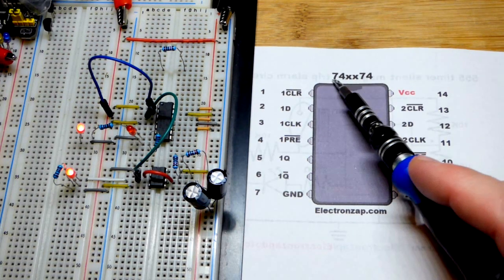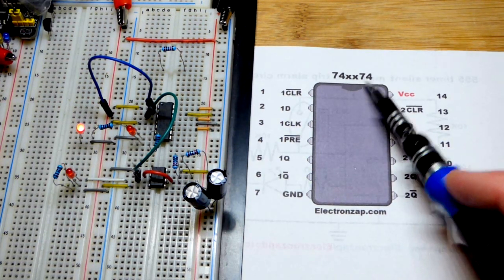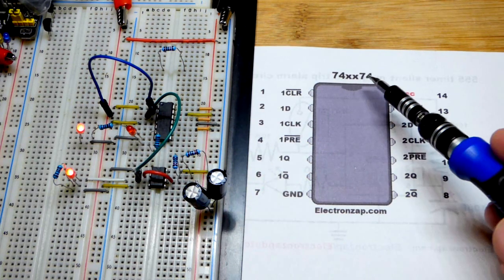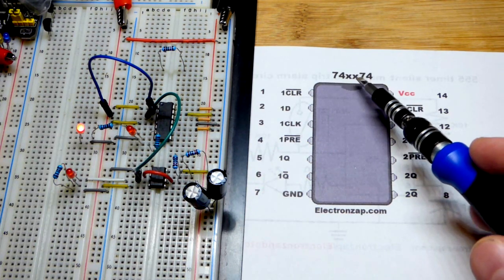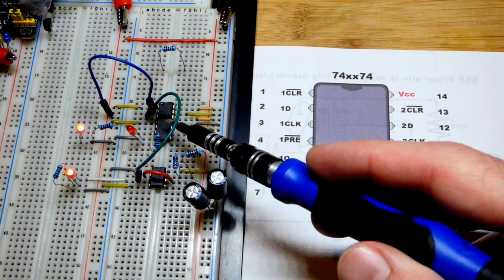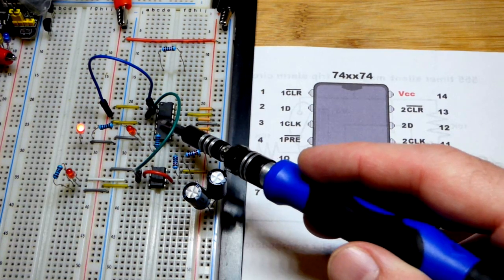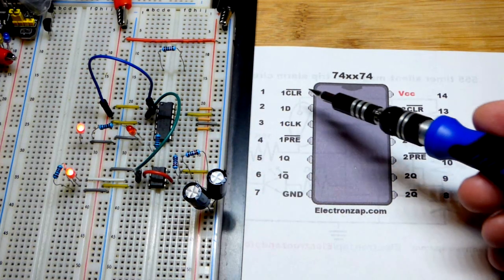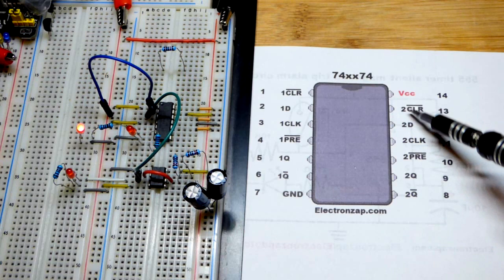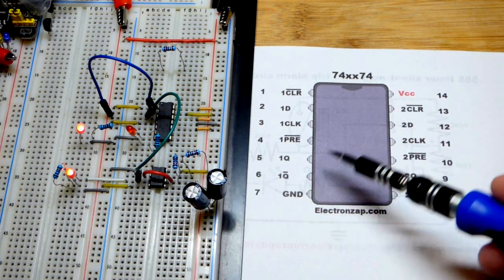In this video we're going to take another look at the 7474 integrated circuit. This is its more intended use than what we looked at in the last video. I'm using the 74HC74 for high-speed CMOS. It's a dual circuit - there's two circuits in there that share the same power supply.